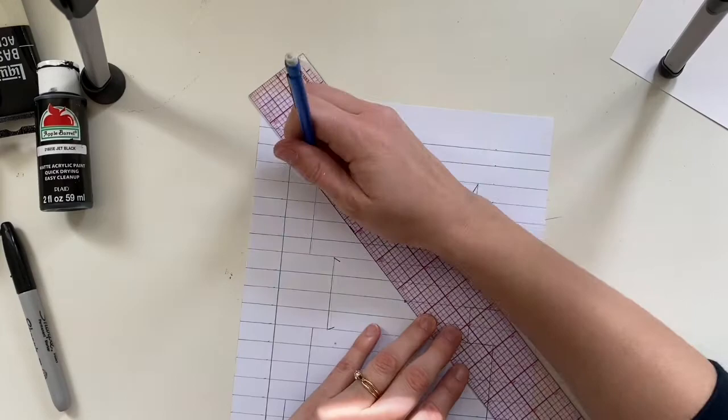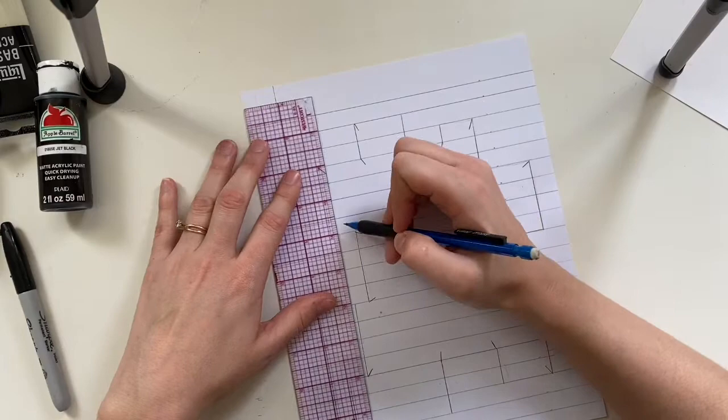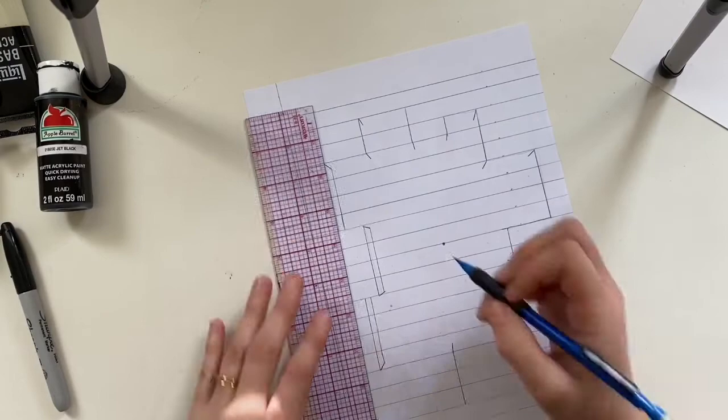All right. So once you have gone around to all of your 90 degree angles, we now need to connect all those notches together. If you see this first line I did, it didn't have a notch.